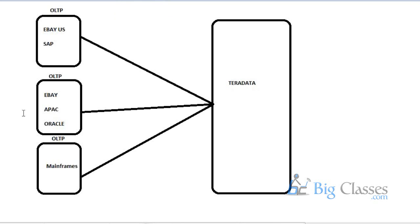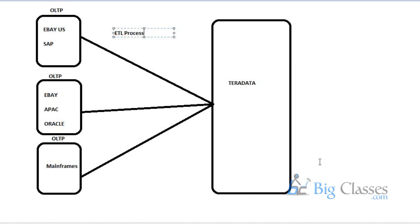The process of integrating data from OLTP systems into the data warehouse is called the ETL process. ETL stands for Extraction, Transformation, and Loading. Extraction is reading data from your OLTP systems, transforming the data, and then loading it into the data warehouse.